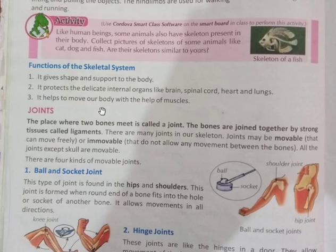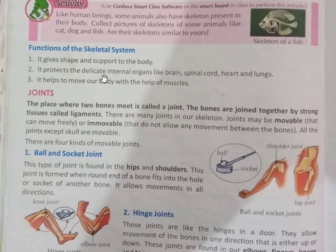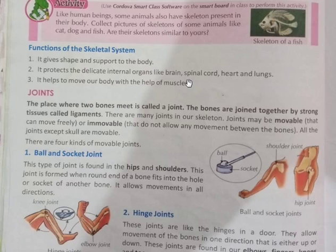Next, the functions of the skeletal system. Number one: it gives shape and support to the body. Number two: it protects the delicate internal organs like the brain, spinal cord, heart, and lungs. It also helps to move our body with the help of muscles.